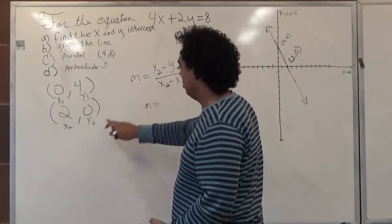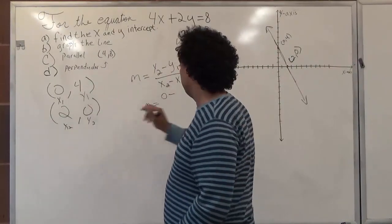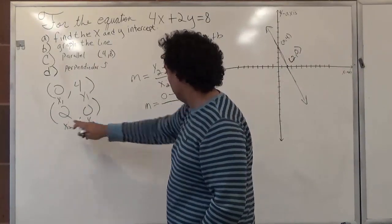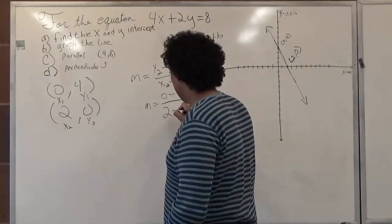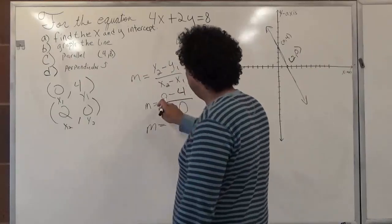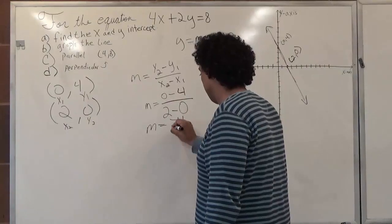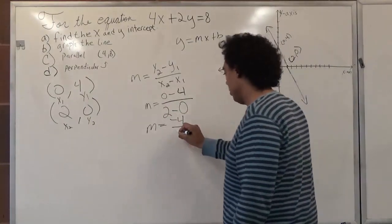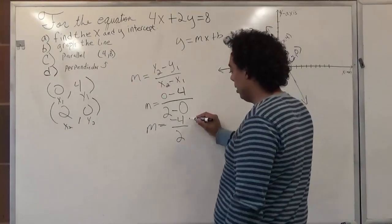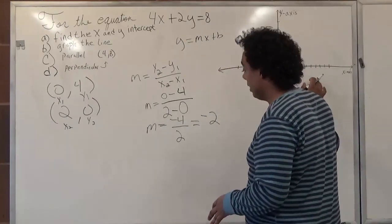So I'll set this as our 2, so y2 and x2, and y1 and x1. I could have picked either one, it doesn't matter, so long as you keep true to which one you declare as 1 and which one you declare as 2. So let's plug in our numbers. m is equal to y2, which is 0, minus y1, which is 4, over x2, which is 2, minus x1, which is 0. So m is equal to 0 minus 4, negative 4, and 2 minus 0 is just 2. But we're not done yet because we can simplify this. Negative 4 over 2 is the same as negative 2. So the slope of this line is negative 2.